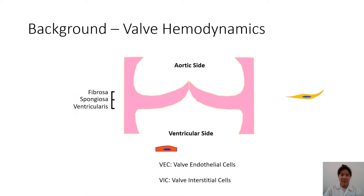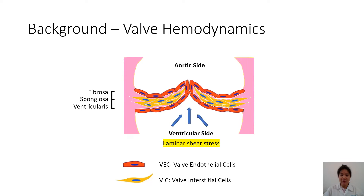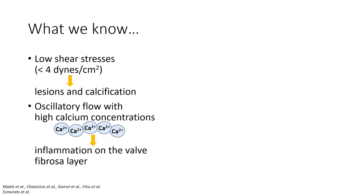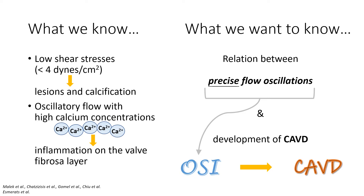As VECs reside on valve surfaces and VICs in the middle layers, VECs are subject to fluid shear stress. Due to the valve structure and direction of blood flow, laminar flow with high shear stress is mainly observed on the ventricularis side, while the fibrosa layer is dominated by low shear stress and oscillatory flow. We know that low shear stresses are commonly associated with lesions and calcification, and that flow oscillations with high calcium concentrations can trigger inflammation on the valve fibrosa layer. We'd like to further understand the relation between precise flow oscillations and development of CAVD.